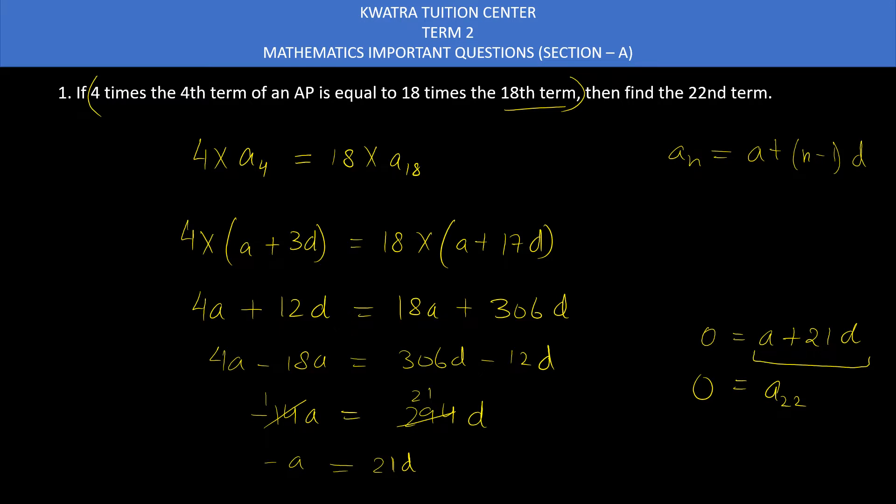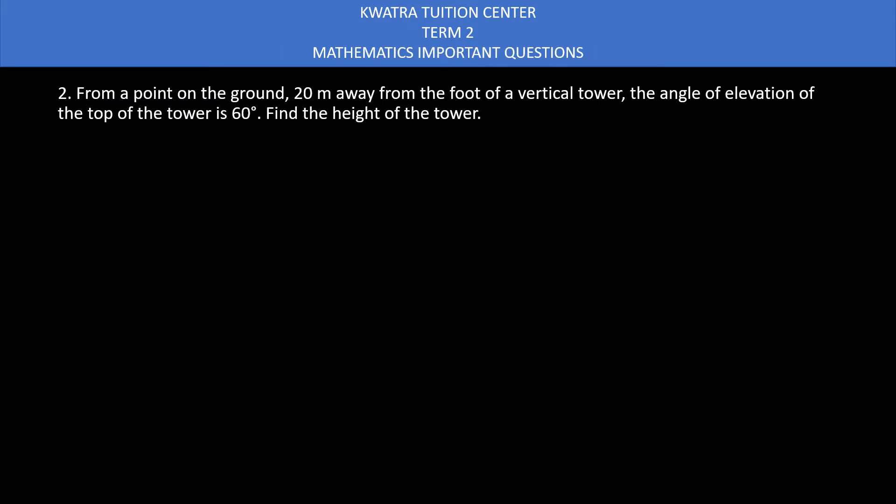Now moving to the second question. It says from a point on the ground 20 meters away from the foot of a vertical tower, the angle of elevation of the top of the tower is 60 degrees. Find the height of the tower. So this is very easy. There's a point on the ground 20 meters away from the foot of the vertical tower. This is your tower. Let's say the height is H, and the angle of elevation is 60 degrees.